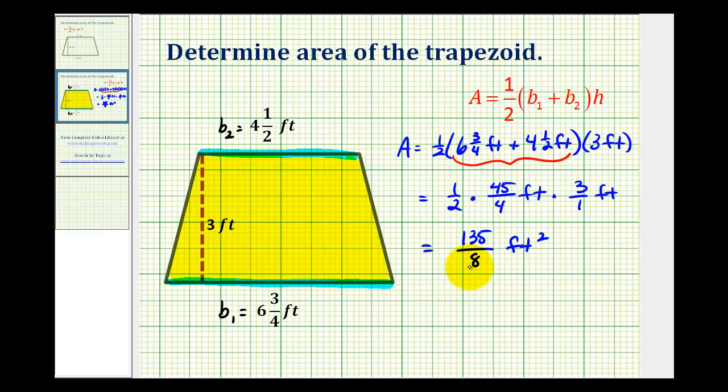But let's go ahead and convert this back to a mixed number. So we'll have one-hundred-thirty-five divided by eight. There's one eight in thirteen. And there's six-eighths in fifty-five. Six times eight is forty-eight. We have a remainder of seven. Which tells us the area is going to be equal to sixteen and seven-eighths feet squared.